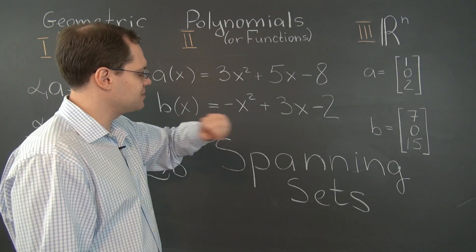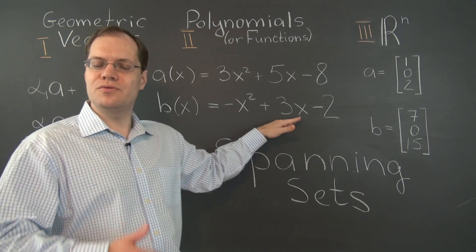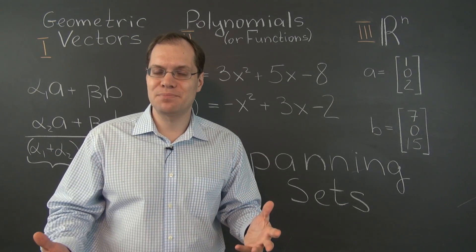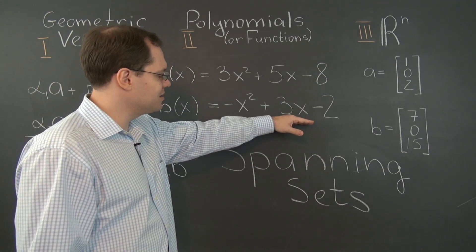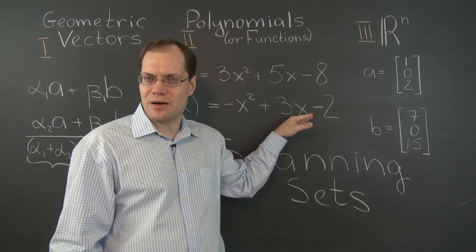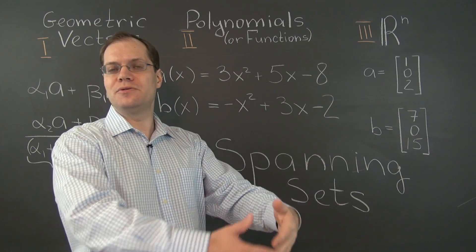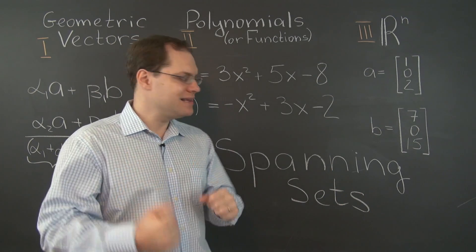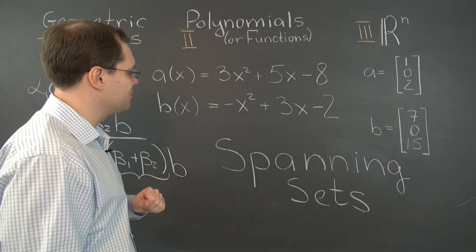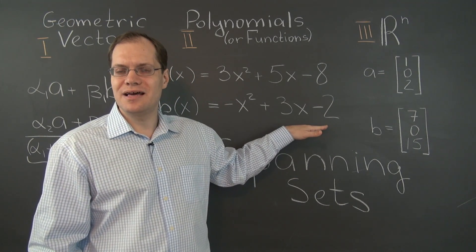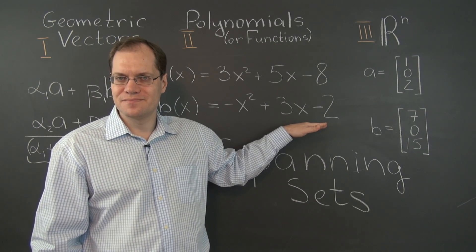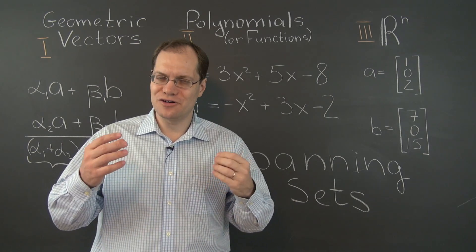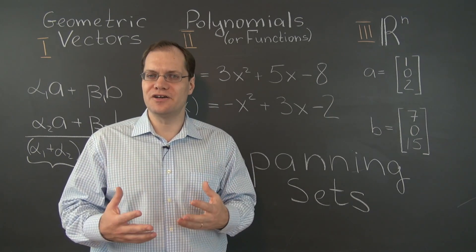And because these polynomials have this property, they're not able to span the entire space of polynomials, because some polynomials don't have that property. If these polynomials can only give us other polynomials that have this property, and many polynomials don't have this property, well then you're not able to generate those polynomials by linear combinations of these polynomials. So there you go. This cannot be a spanning set. This is not a spanning set by this very, I would call it ingenious or at very least insightful linear algebra argument.